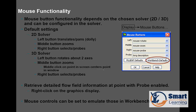Next is mouse functionality. You can configure the left, middle, and right buttons. Mouse button functionality depends on the chosen solver — 2D or 3D — and can be configured in the solver itself. For the 2D solver, you can configure the left button for rotation or other functions. In the 3D solver, the left button can be used for rotating about two different axes, the middle button for zoom, middle-click to center on a point in the screen, and the right button for selecting. The middle button is primarily used for zoom and the left for rotate.